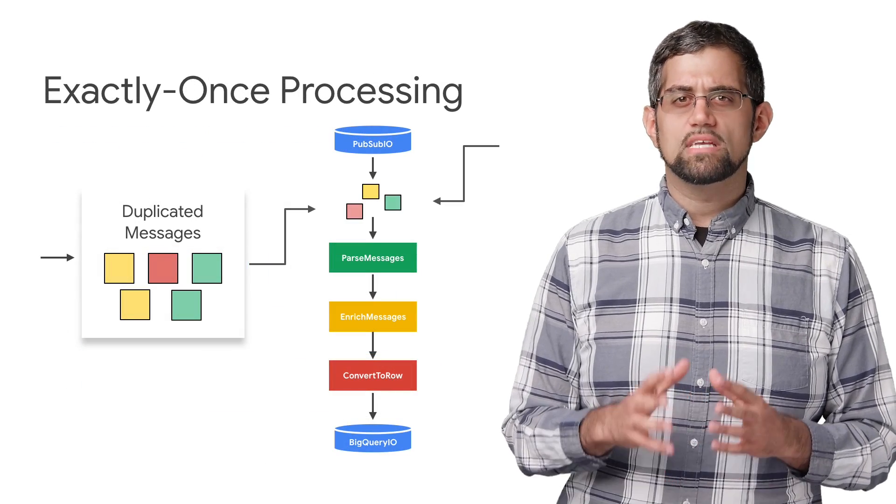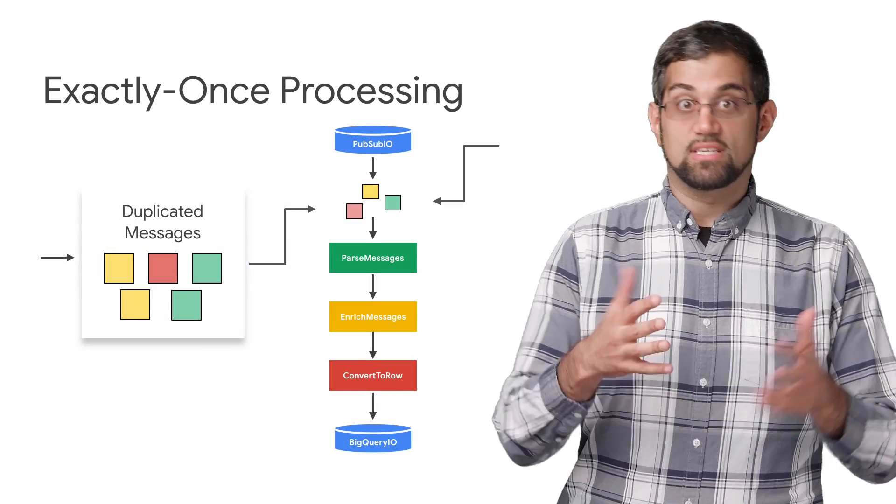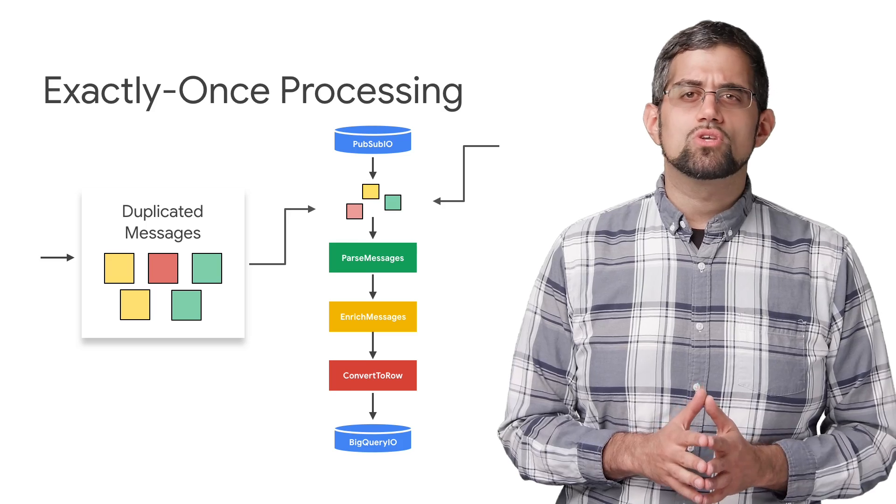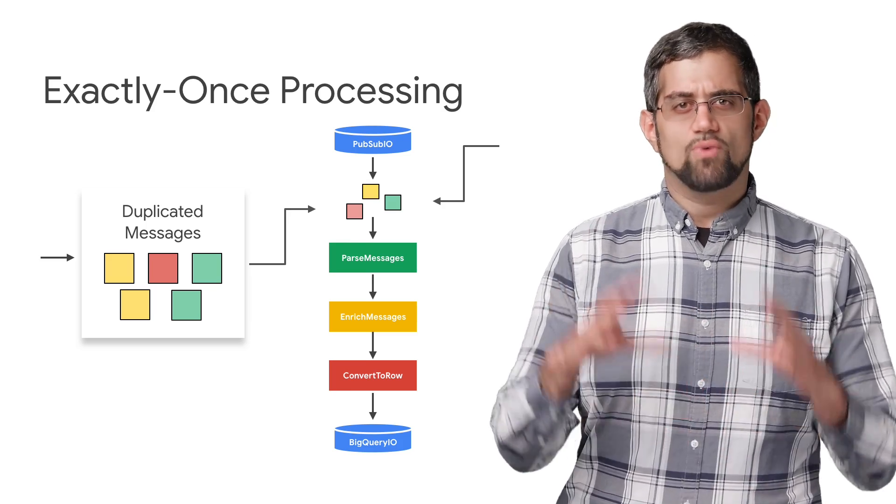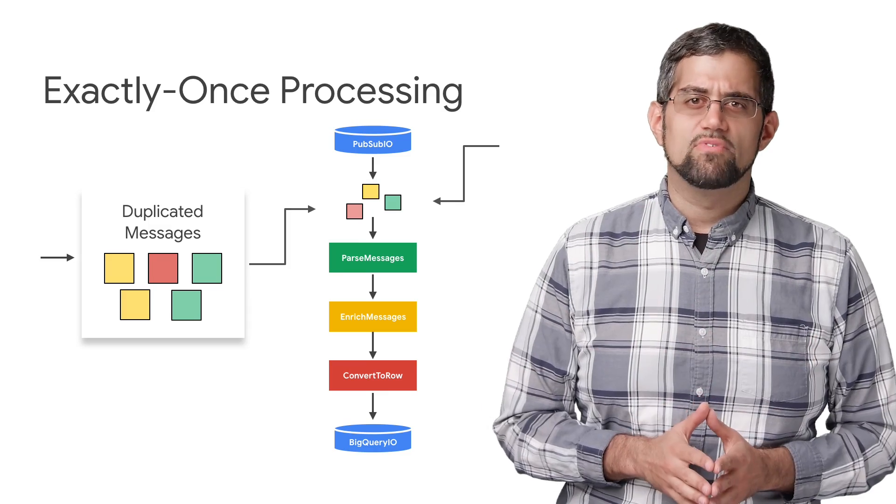First, we'll want to make sure we handle each event only once through exactly-once processing. We can use Google Cloud PubSub to handle all of the events, but we'll add in some deduplication logic right in Dataflow to avoid handling the same event twice.